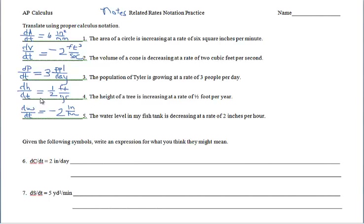Hopefully you attempted those and we're on the right track. For the height of the tree, I decided to use the variable H — I probably wouldn't use T for tree, just because it's a rate of change with respect to time, which might make dT/dt a little confusing. That answer is one-half foot per year. For the water level problem, I decided to use W — you could have used L. It's up to you unless you're specifically told what variable to use.